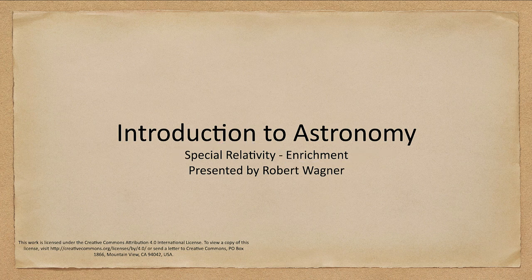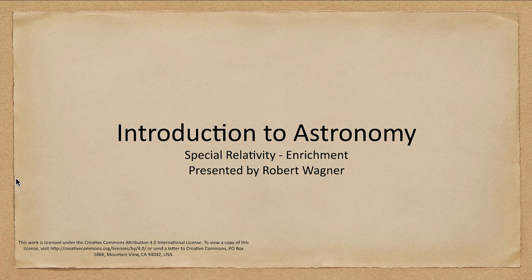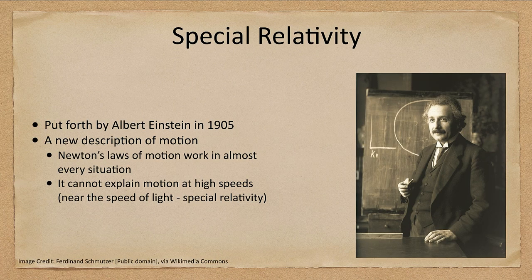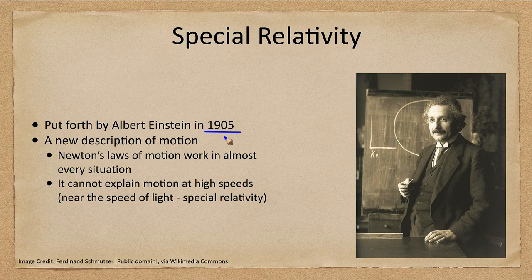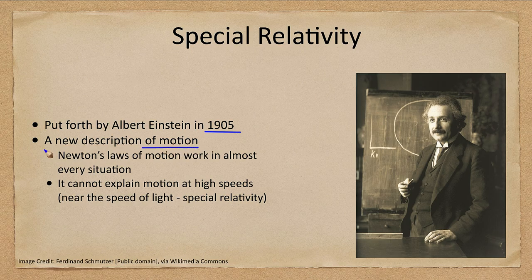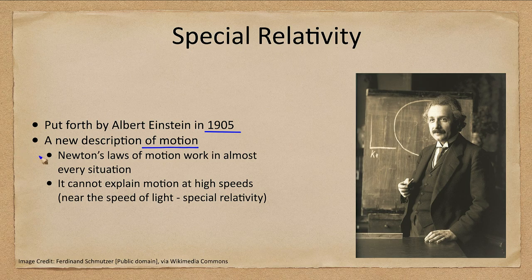We've mentioned special relativity before. Special relativity was put forth by Albert Einstein in 1905, about a decade before his general theory of relativity. It was a new description of motion - remember that general relativity describes gravity, while this one talks about motion.